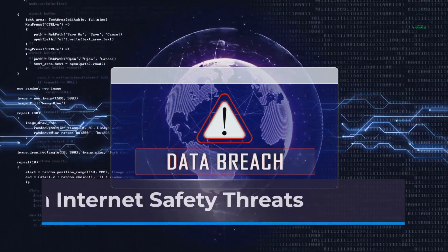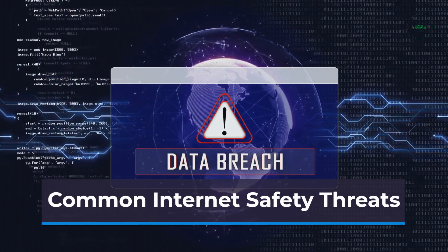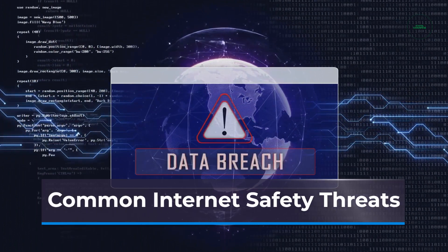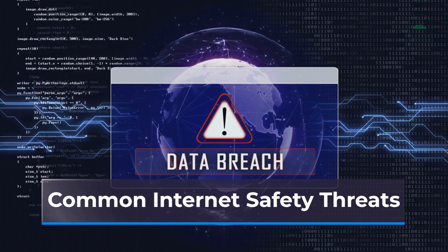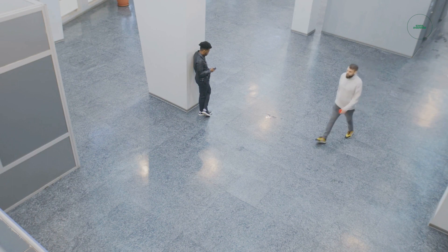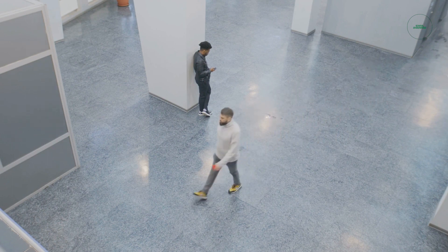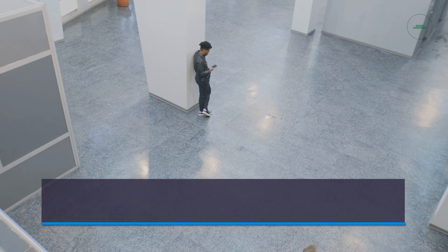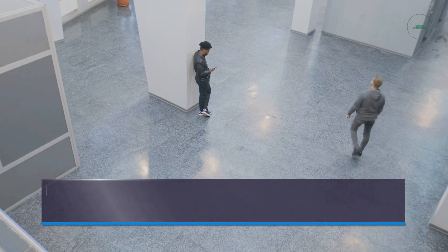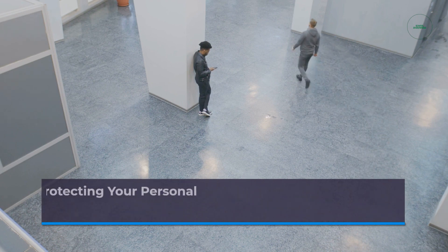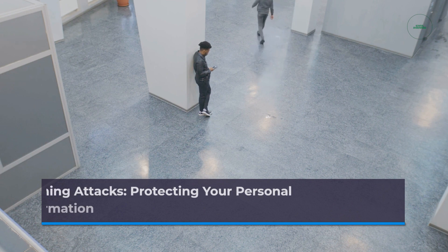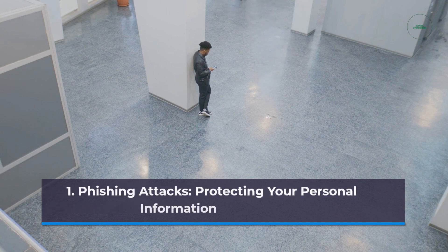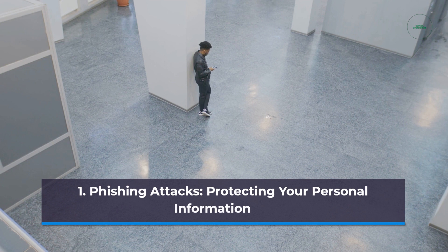The internet is teeming with potential threats that can compromise your safety and security. Let's explore some of the most common internet safety threats you should be aware of. Phishing attacks are one of the most prevalent forms of cybercrime. In these attacks, cybercriminals attempt to trick individuals into revealing their sensitive information, such as passwords, credit card details, or social security numbers. They often pose as trustworthy entities, such as banks or popular websites, and use deceptive techniques to gain victims' trust.